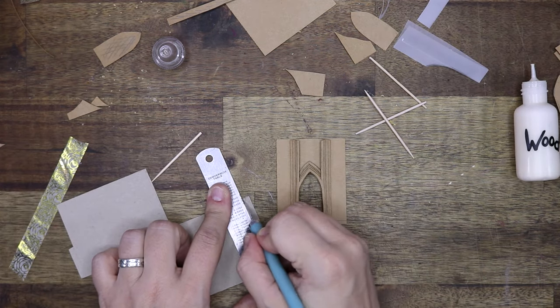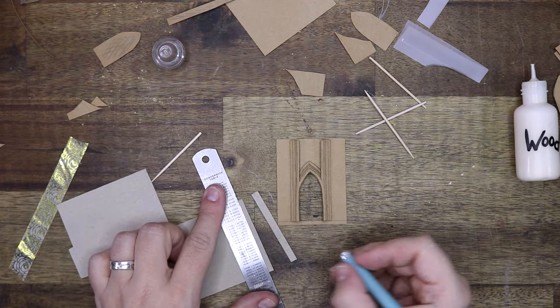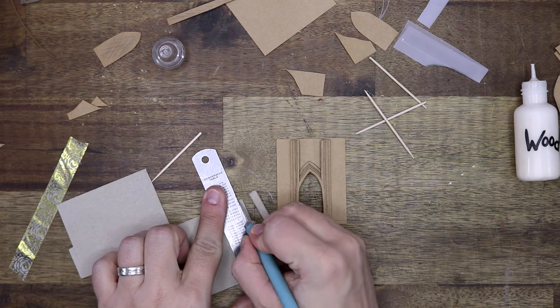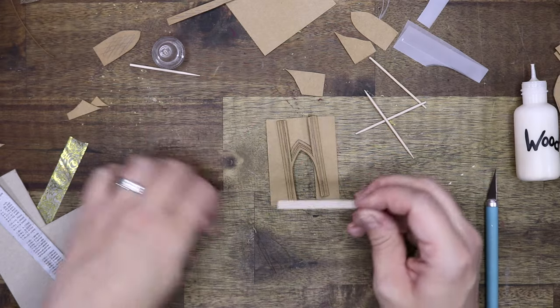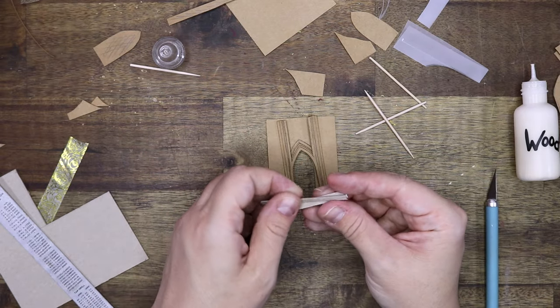From some thicker cardboard or cardstock, I actually think that these are two layers of cereal box glued together. I am making some stairs leading up to the archway.